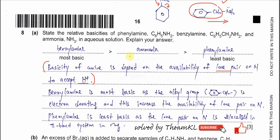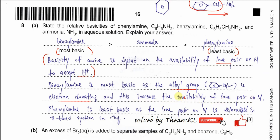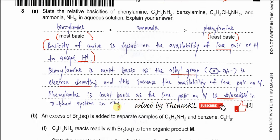You need to explain the most basic and the least basic. Benzylamine is the most basic because it has an alkyl group — the benzene ring with CH2 — which is electron donating and increases the availability of the lone pair on nitrogen. Phenylamine is the least basic because the lone pair on nitrogen is delocalized into the pi-electron system of the benzene ring, making it less available.